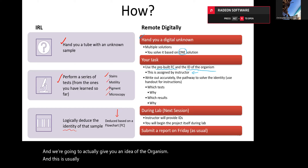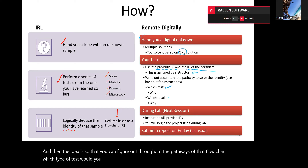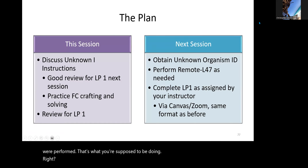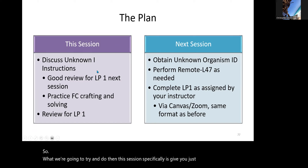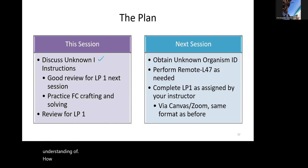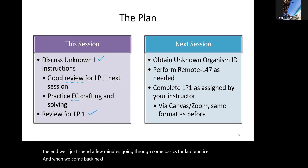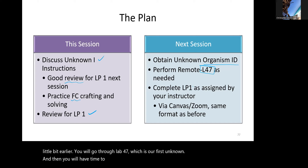This is usually assigned on the day of, and your job is to figure out throughout the pathways of that flow chart which tests you would perform, what results you'd expect, and explain the reasoning — the logic of why those results and why those tests were performed. This session we'll give you a basic understanding of how the unknown works, practice creating flow charts, then spend a few minutes on lab practical basics. Next session we'll assign the ID, you'll go through Lab 47, and complete the lab practical.